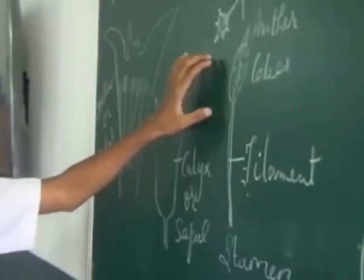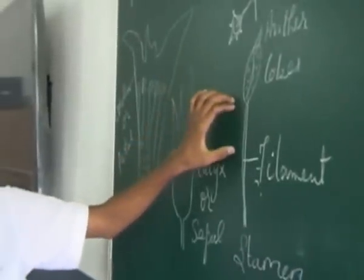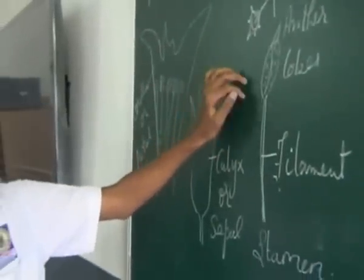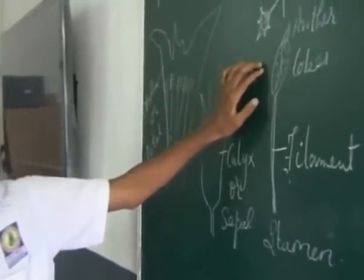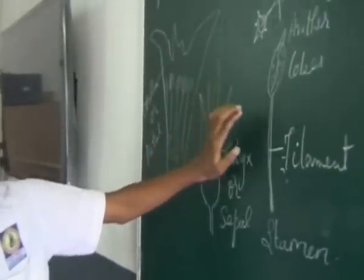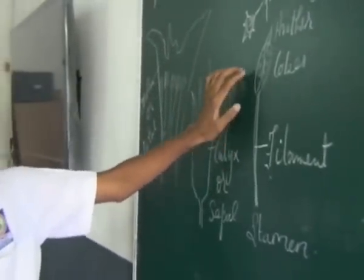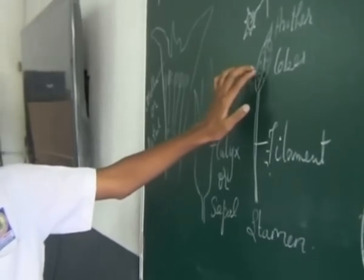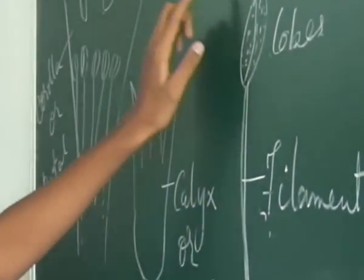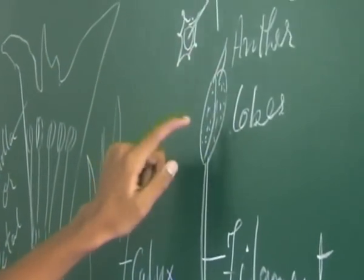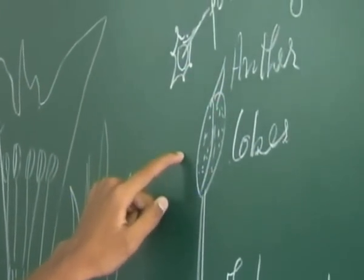The male reproductive part has two parts, that is called Anther and Filament. The anther has two lobes, and it is called Dithecous. The pollen grains are present in the anther.